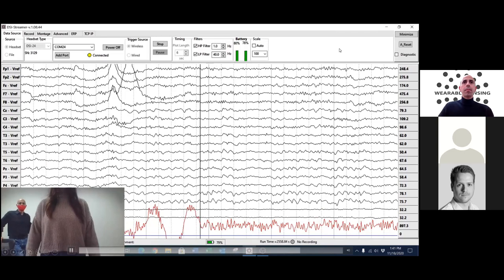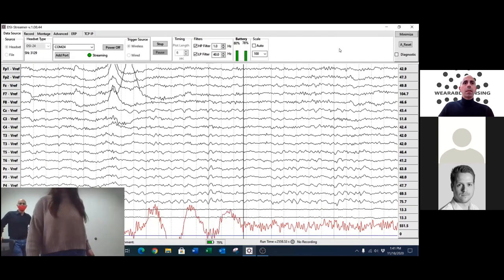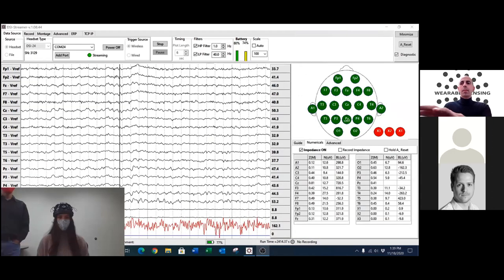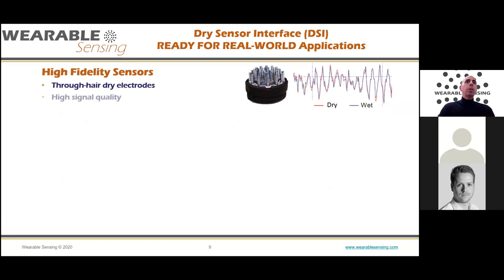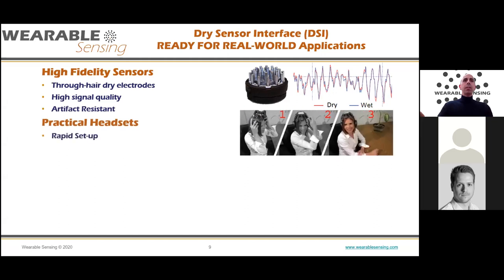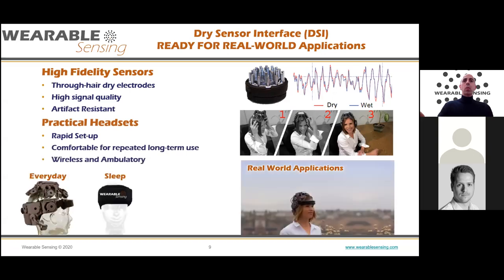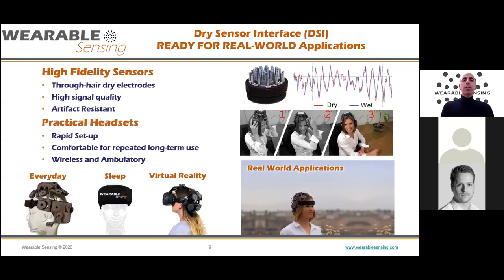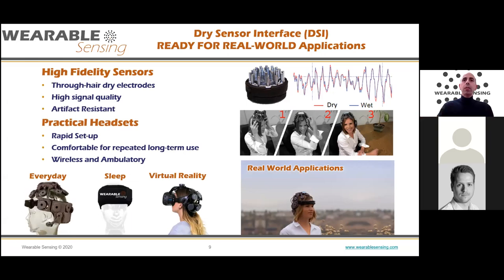To summarize: we developed a high-fidelity dry electrode EEG that goes through hair, produces high signal quality, is artifact-resistant, easy and fast to set up, comfortable to wear, and wireless. We have headsets for daily life, during sleep, and integrated into virtual reality headphones.